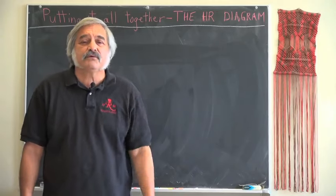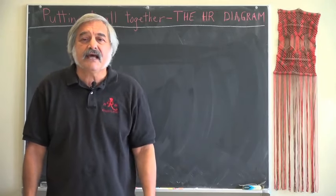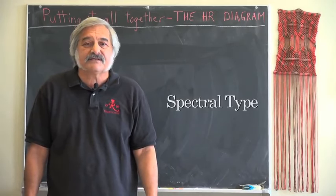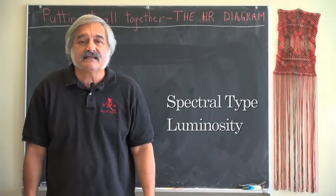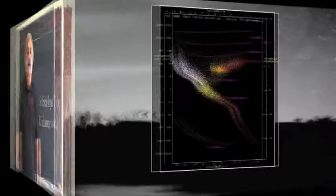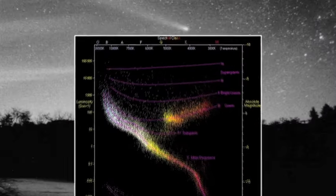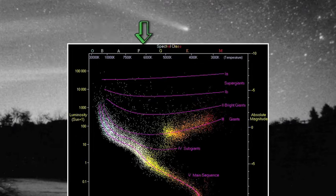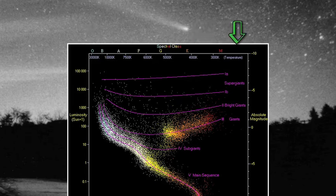But before we explore this further, let's look at how many ways we have to express both the spectral type of the stars and their associated luminosity. First, you can see that the spectral classification scheme we talked about last week is associated with the star's temperature. This was Cecilia Payne's work.